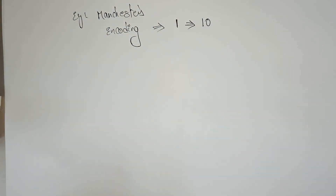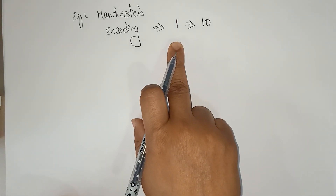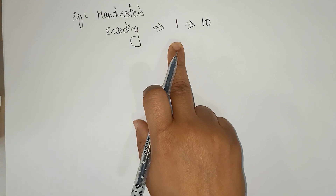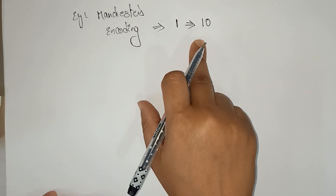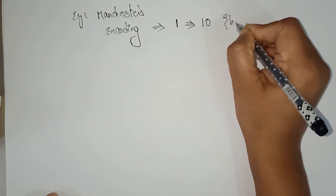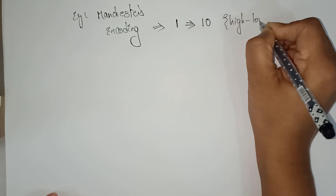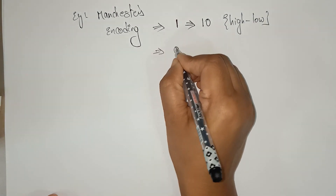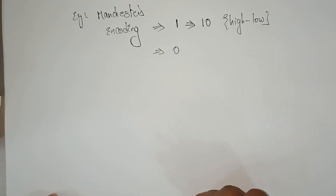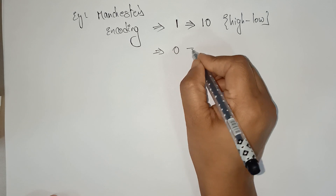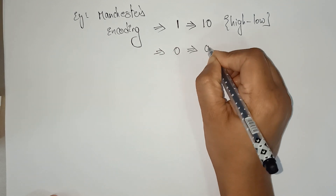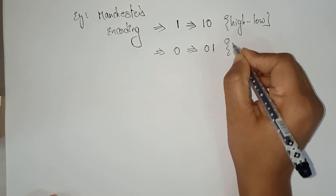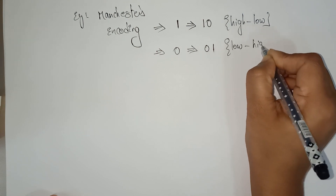Because in LAN encoding each bit of data is represented by two physical bits, whenever a one bit is there it is represented as 'one zero' — that means high to low. Similarly, whenever a zero bit is there, zero is encoded as 'zero one' — that is low to high.